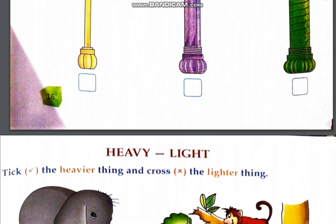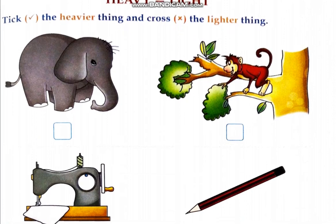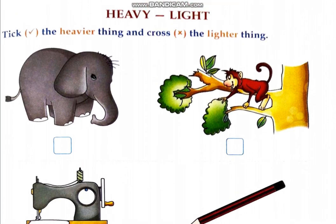Next is heavy or light. Heavy means bhari, light means halka. Now you have to look at the pictures and identify which one is heavier and which one is lighter. Tick the heavier thing and cross the lighter thing. Elephant or monkey? Elephant is heavy, then tick.